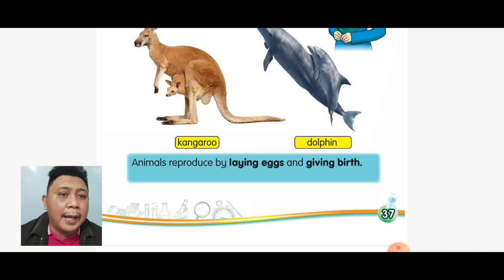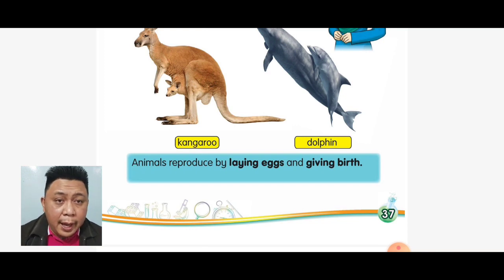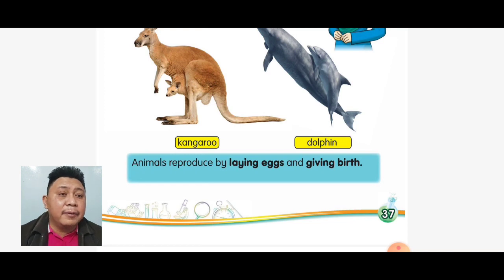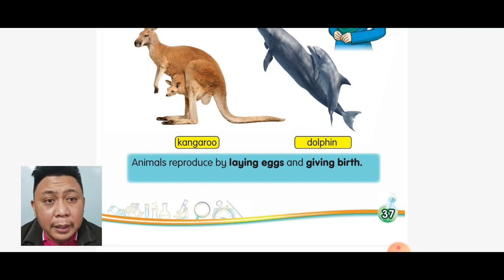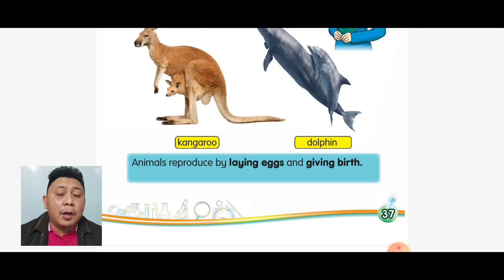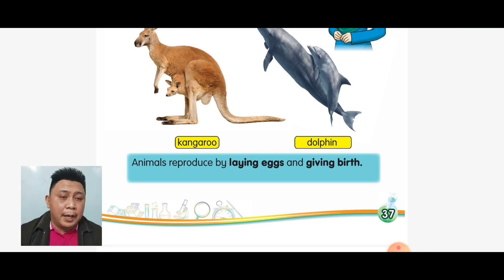So in conclusion, animals reproduce by laying eggs and giving birth. Haiwan ini akan membiak sama ada melalui bertelur ataupun beranak ataupun melahirkan anak.